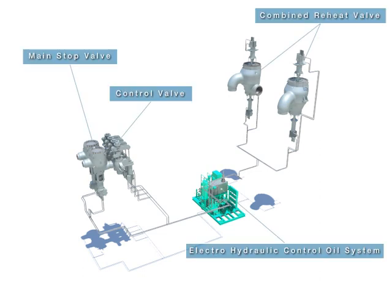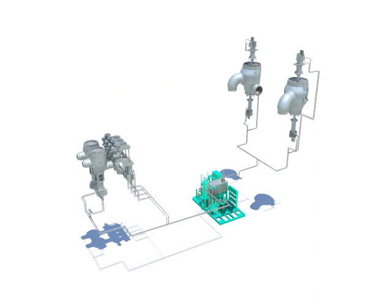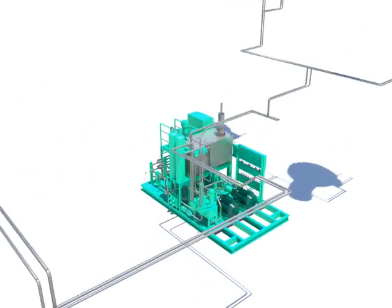The hydraulic power unit is used by connecting with the electro-hydraulic control in order to control the turbine operation.